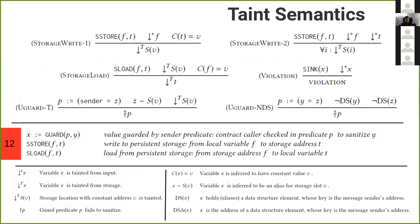Tainting of storage is handled by the next two rules. Storage write one says that if a local variable f is stored to a storage address t and f is tainted, then the storage location pointed to by t — because t is a constant — is also tainted. Storage load is the dual of this rule: reading tainted storage locations taints the local variable in which the value is read.